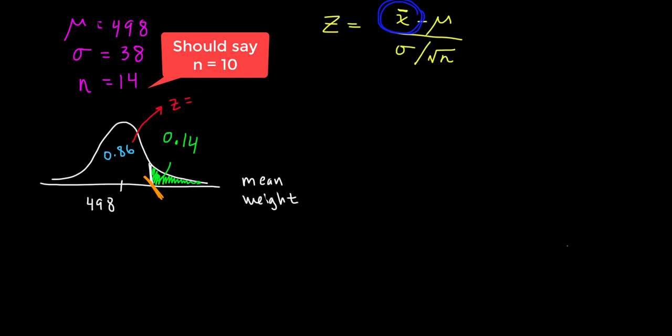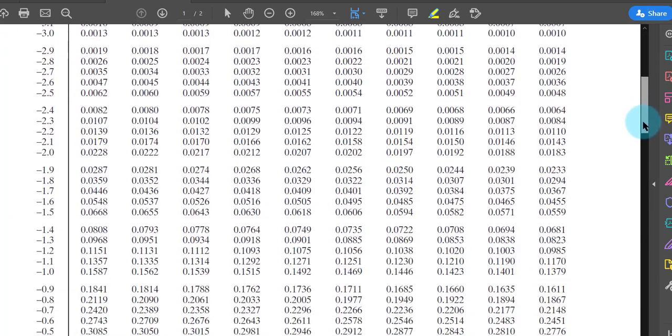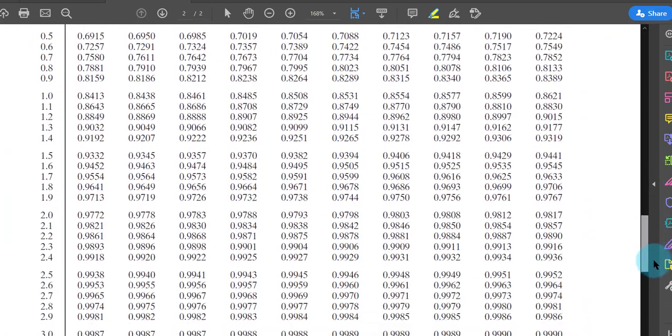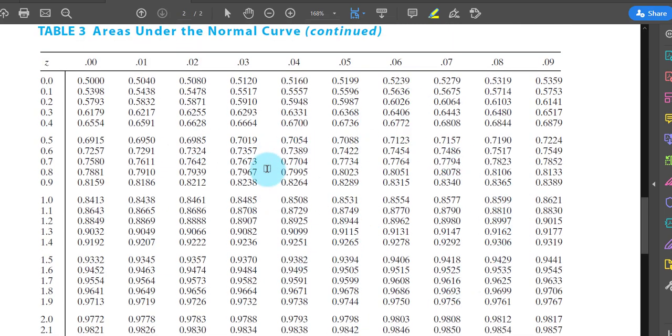Let's look at the z-table. Because this is a backwards problem, I need to look for 0.86. Remember this? It's in the mess, right? You're looking for 0.86 up in this business here. And I think I've identified it.